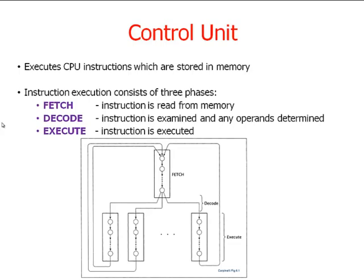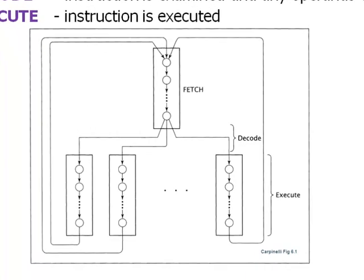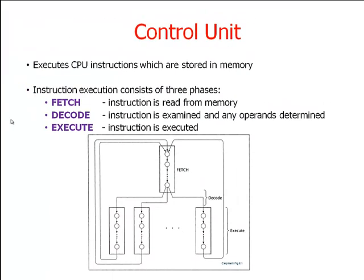Instruction execution consists of three phases: fetch, where the instruction is read from memory; decode, where the instruction is examined and any operands determined — we'll understand what an operand is a little bit later in the course; and execute, where the instruction is executed. The diagram is called a state machine, and it continually runs through a fetch cycle, a decode, and an execute path depending on what is decoded, then comes back to the top — fetch, decode, execute — continuously. It's a finite state machine, and you'll learn more about this in level four in compilers.